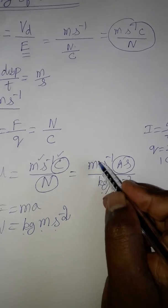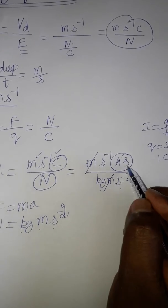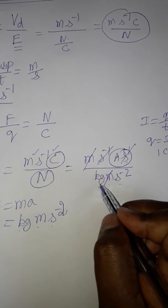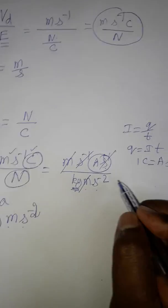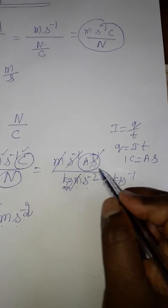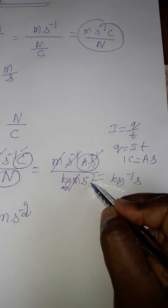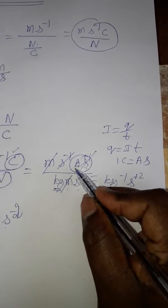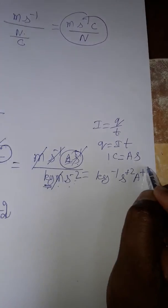So meter meter getting cancelled, second inverse second plus, it is getting cancelled. So finally, kg will go to the numerator, we can call kg inverse. Second is going to the numerator, the minus sign is changed to the plus sign. Already ampere is there, ampere plus 1.